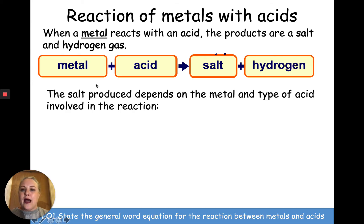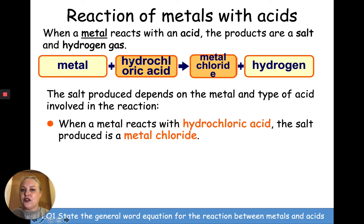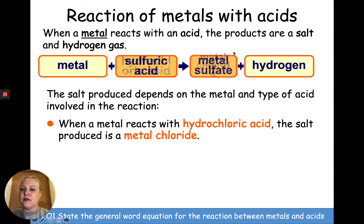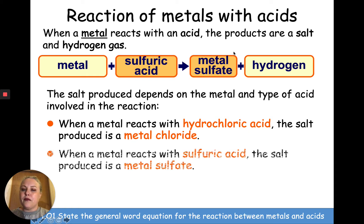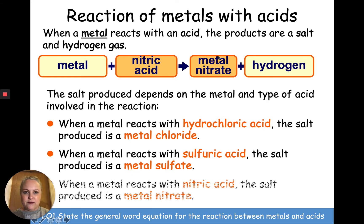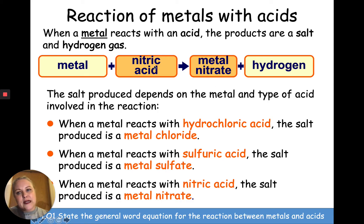When you use hydrochloric acid, you get a metal chloride — so the salt made is called a metal chloride. If you use sulfuric acid, the salt made will be called a metal sulfate. It's not salt as in fish and chips salt — it's a chemical. If we use nitric acid, the metal reacts with nitric acid and we'll get a metal nitrate.